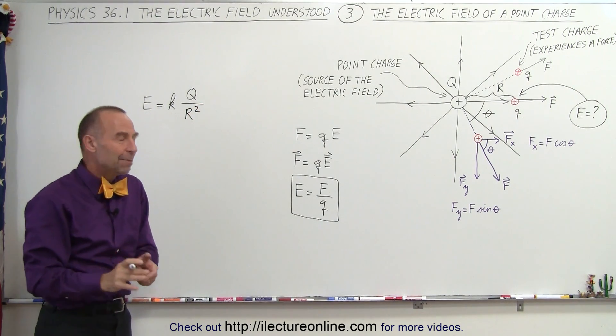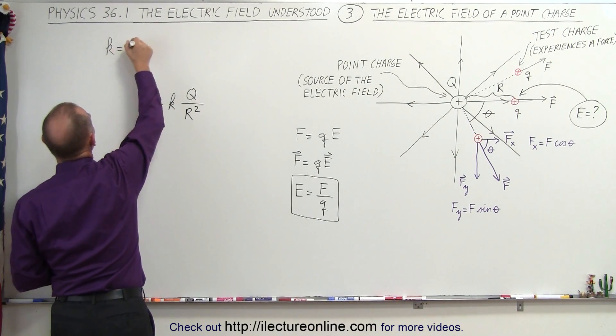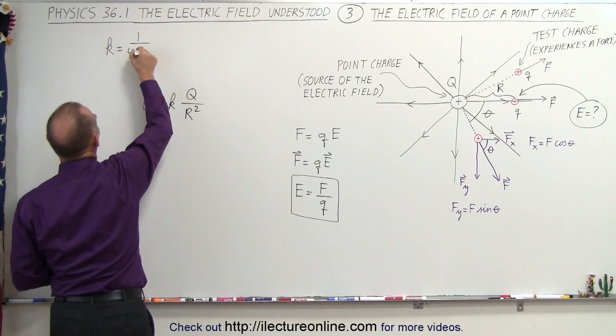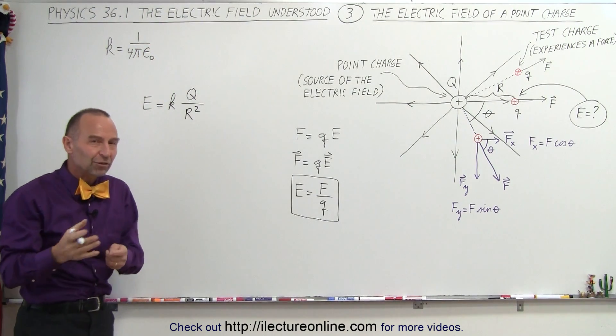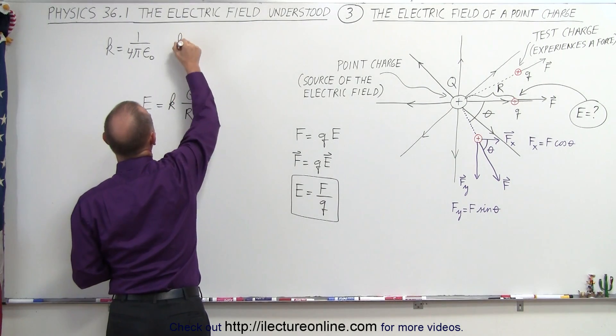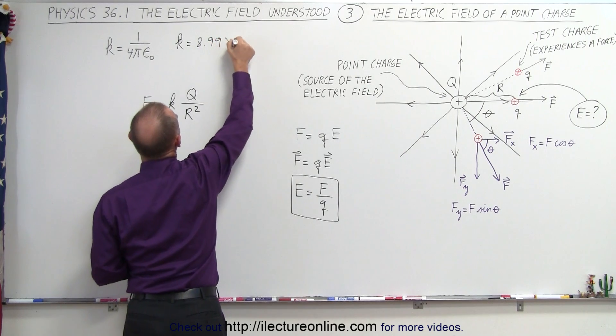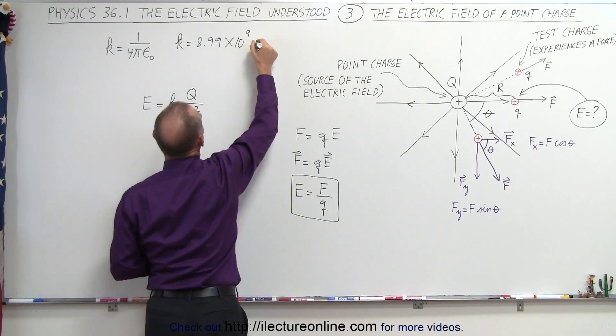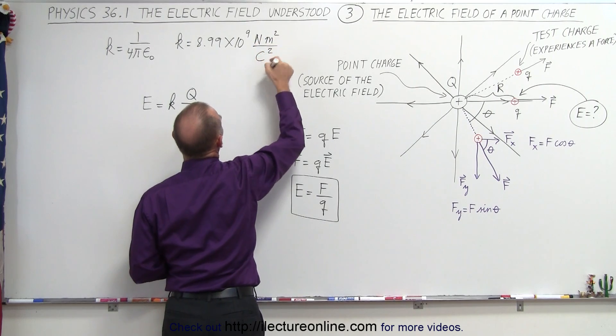Wait a minute, what is k? Well, k can be defined in two ways. k can be defined as being 1 over 4 pi epsilon sub naught, where epsilon sub naught was the permittivity of free space that we talked about in the previous videos. Or you can also say that k is equal to 8.99 times 10 to the ninth newton meters squared per coulomb squared.